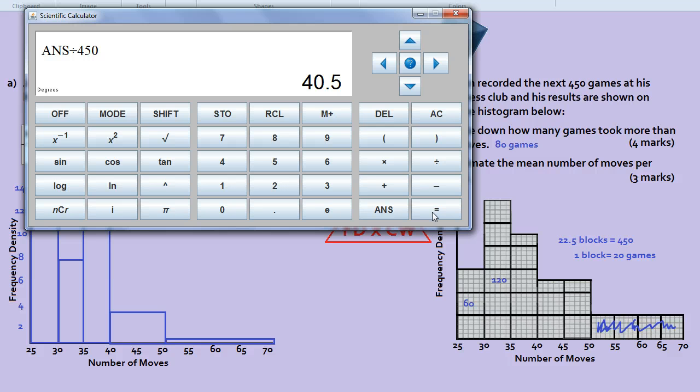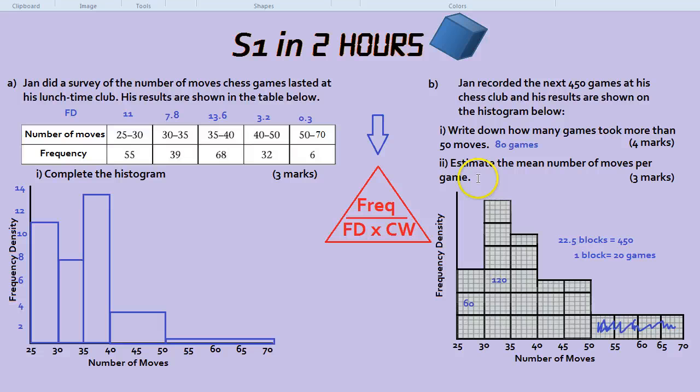So that means, on average, the mean number of moves per game would be 40.5. And now you have the triangle. You can do any histogram question.